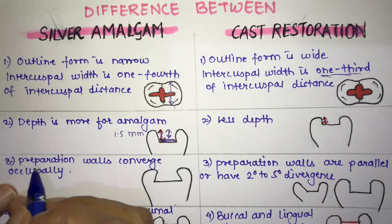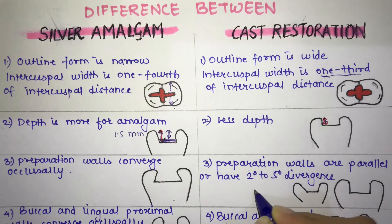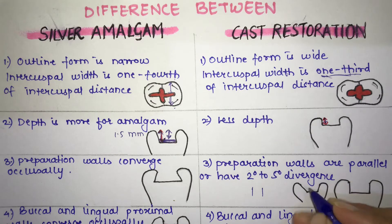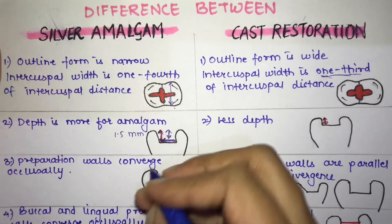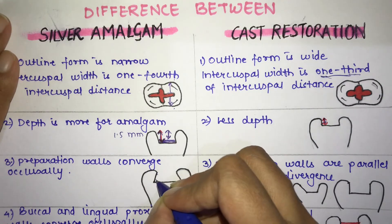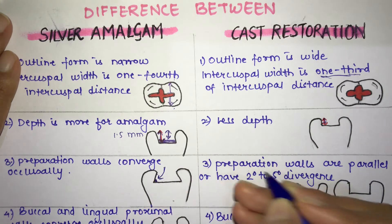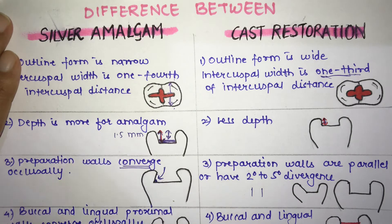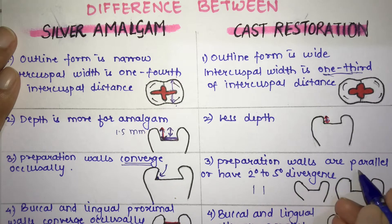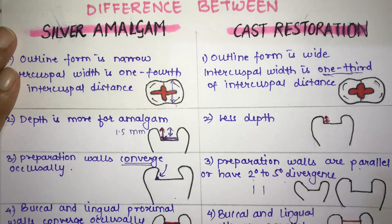The third difference is in the preparation walls. In amalgam, the walls converge occlusally, whereas in cast restoration the walls are parallel or can be slightly divergent. In amalgam, this convergence creates an undercut which provides primary retention. In cast restoration, the divergence is very minimal — only 2 to 5 degrees.